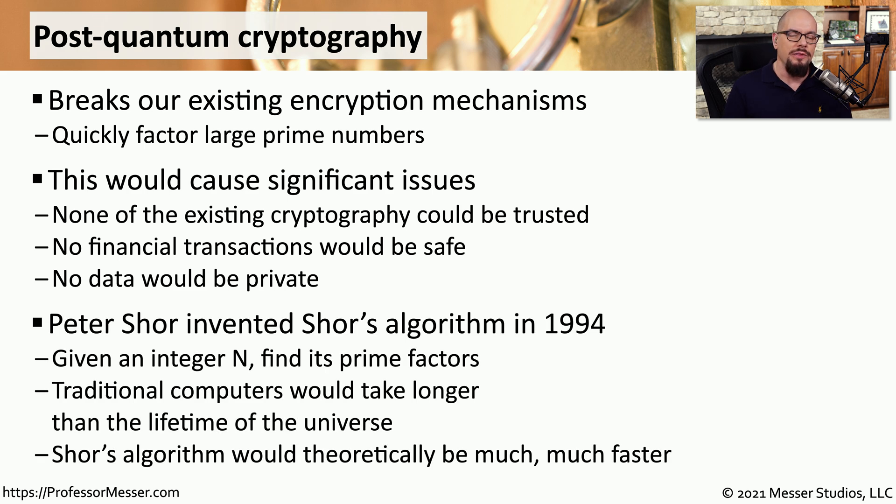A description of how this could be done with quantum computing was created by Peter Shor. He created what's called Shor's algorithm in 1994, where he looked at how we were using prime numbers and came up with a way that you could greatly shorten the process of being able to factor this information. This could take processes that would effectively take longer than the lifetime of the universe and make them something very feasible to use with quantum computing.